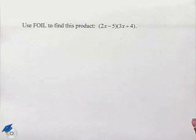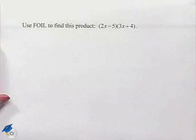Now let's look at a problem where we need to multiply polynomial expressions. Use FOIL to find this product: 2x minus 5 multiplied times 3x plus 4.